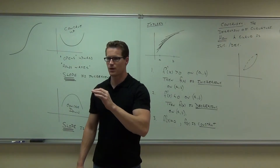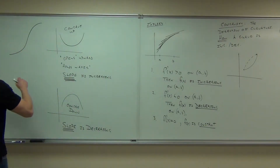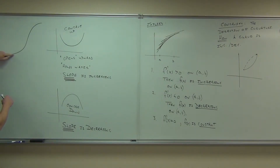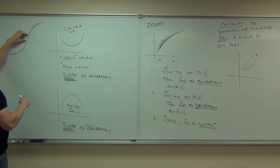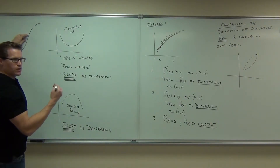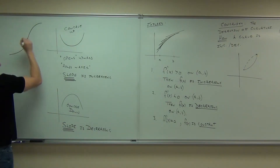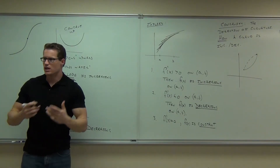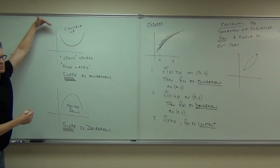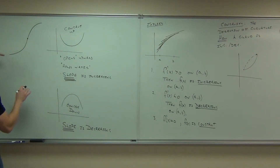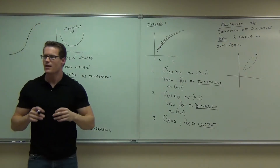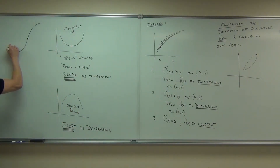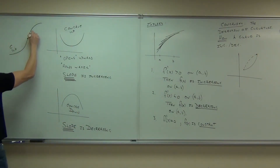Stop me when I change from concave up to concave down. What do I start with here? Concave up. And somewhere in here we change — somewhere right about there. We change from holding water to being an umbrella, from being concave up to concave down — the slope was increasing, increasing, increasing, and then the slope dies off, decreases, decreases. That changes from concave up to concave down.